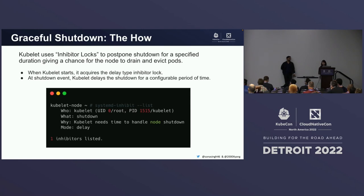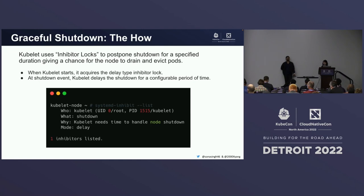Let's talk about how the graceful node shutdown works. For this feature, Kubelet relies on systemd's inhibitor lock mechanism. When Kubelet starts, it acquires this delay-type inhibitor lock, and it watches for shutdown events. When it detects a shutdown, it delays the shutdown and terminates the pods, making sure everything's released before the real shutdown.